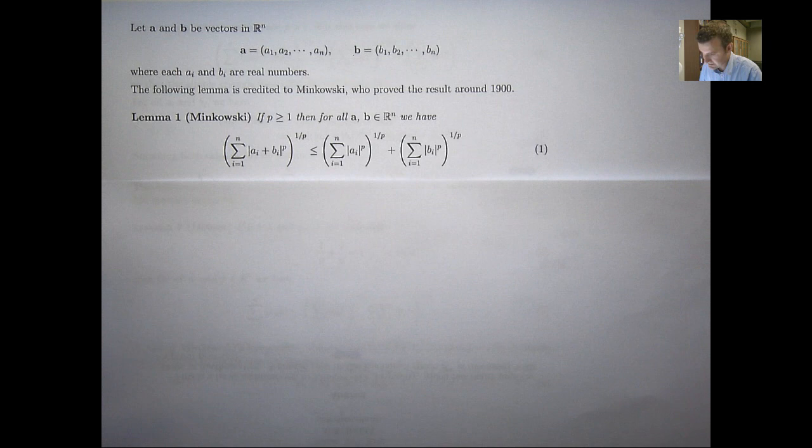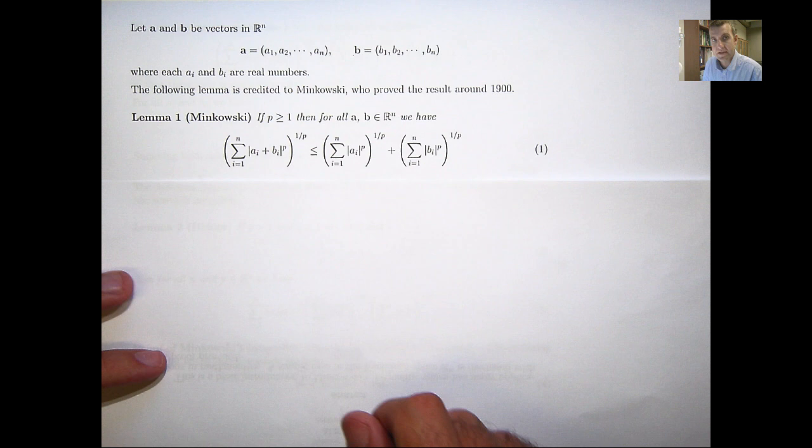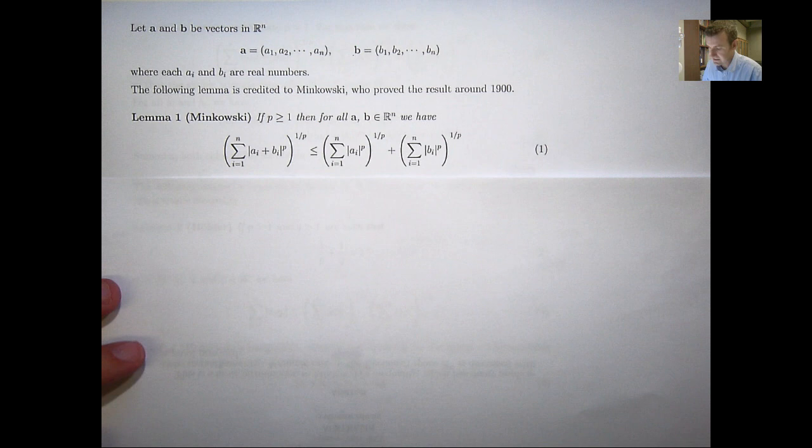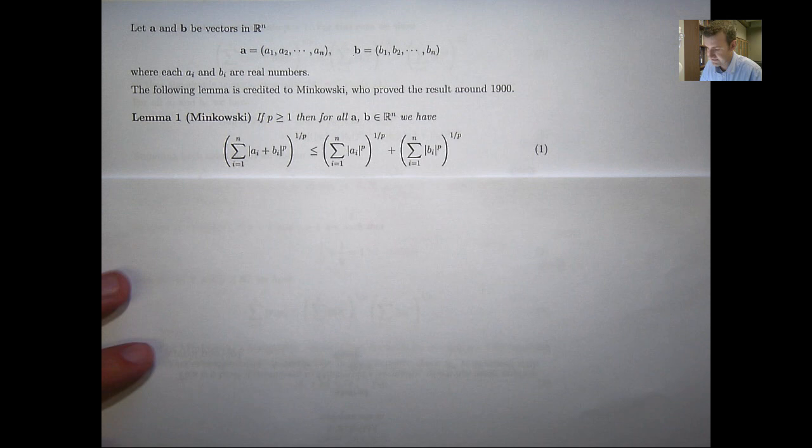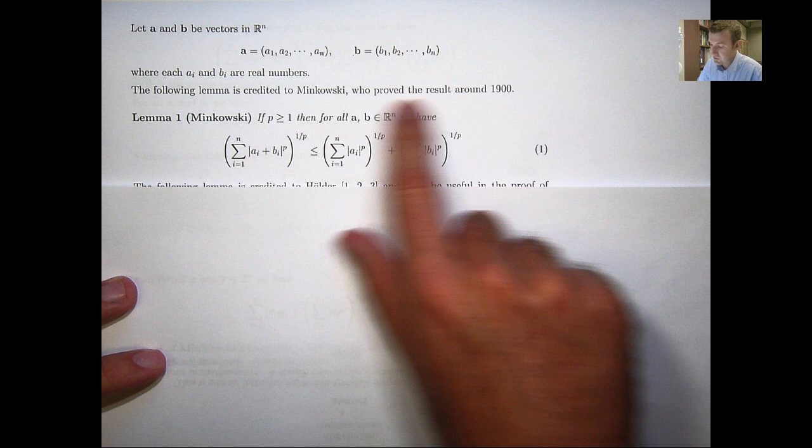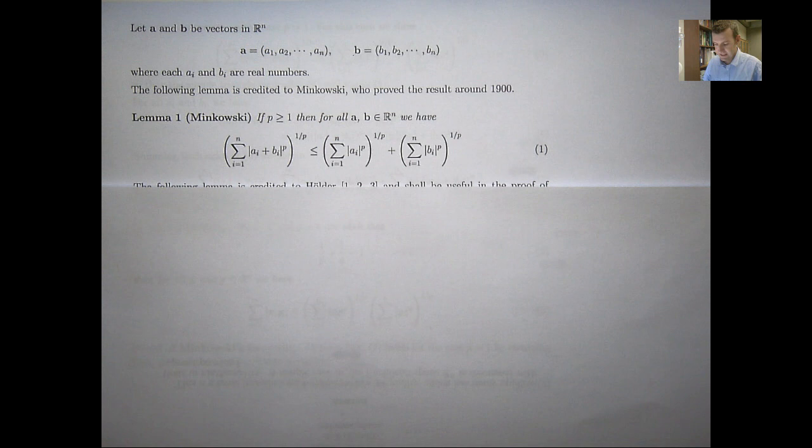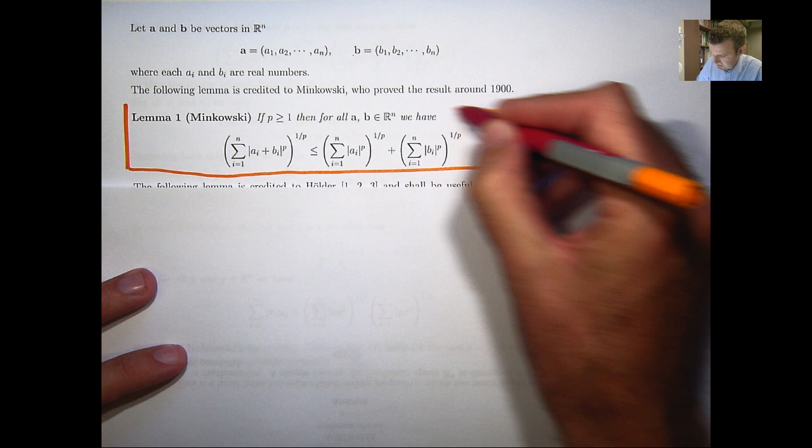Let these boldface A and B be vectors in R^N. Throughout this presentation whenever you see boldface letters they represent vectors. Here they're written out in their component form just as rows, and I've used rows instead of columns just to save a bit of space. The following result is due to a mathematician called Minkowski who proved the result around 1900. In particular, this lemma will be the main focus of this presentation.